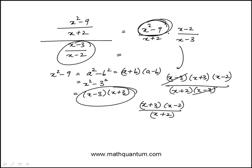We don't have to multiply this out, because looking at the answer choices, they want the answer left in factored form. Comparing to the answer choices, this is identical to B — the only difference is the order of the product, but it is equivalent. So the answer is B.